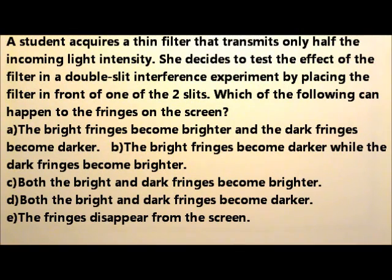A student acquires a thin filter that transmits only half the incoming light intensity. She decides to test the effect of the filter in a double slit interference experiment by placing the filter in front of one of the two slits. Which of the following can happen to the fringes on the screen?